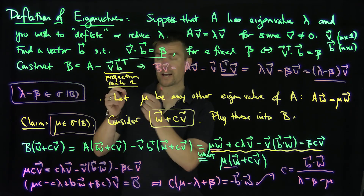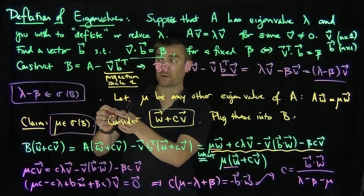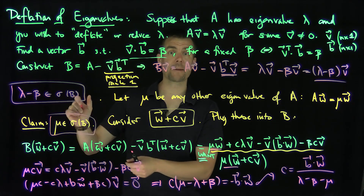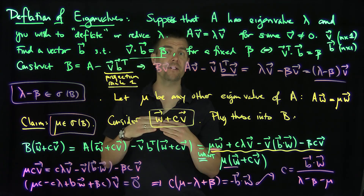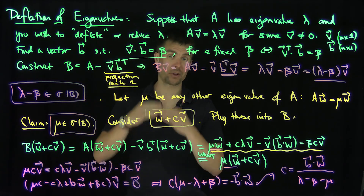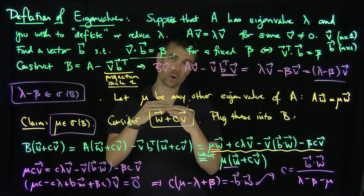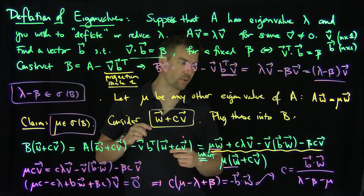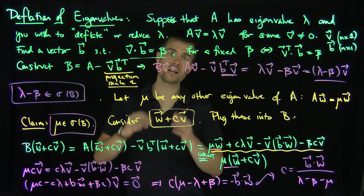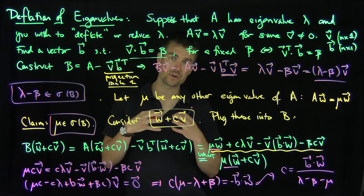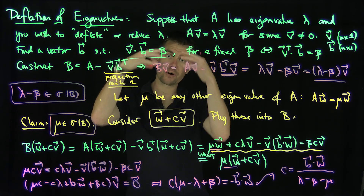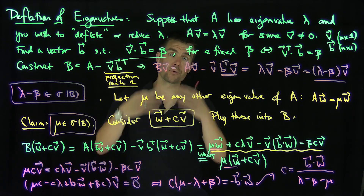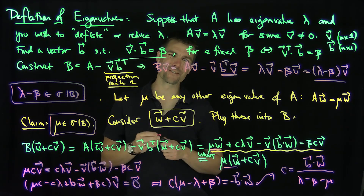In summary, the spectrum of B is the spectrum of A with λ replaced by λ minus β. By choosing β equal to λ, we can zero out the largest eigenvalue, while all other eigenvalues are preserved. The second-largest eigenvalue then becomes the largest, and you can repeat this process iteratively. Thank you very much.